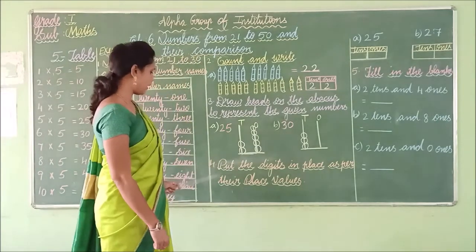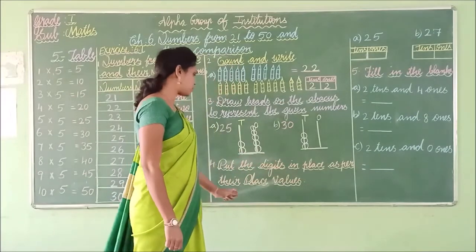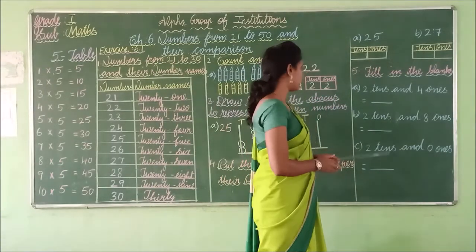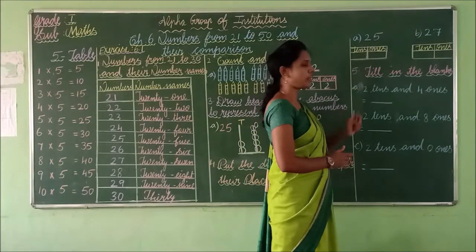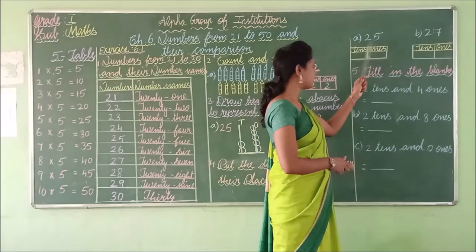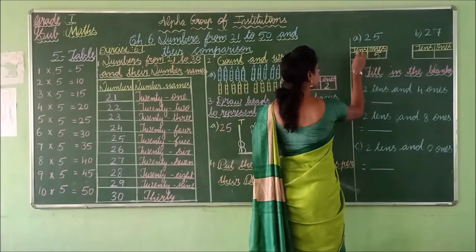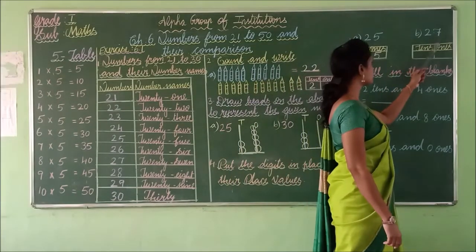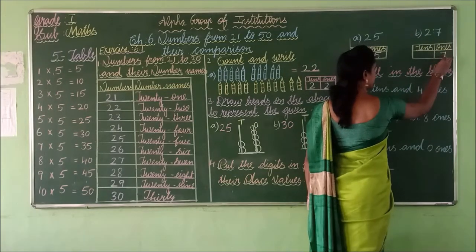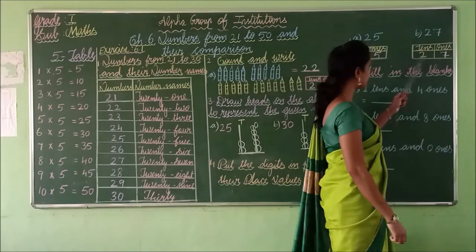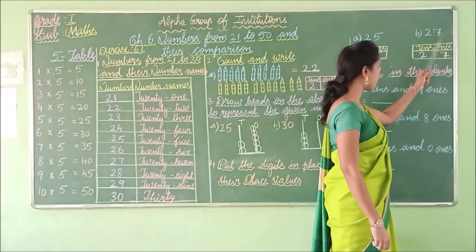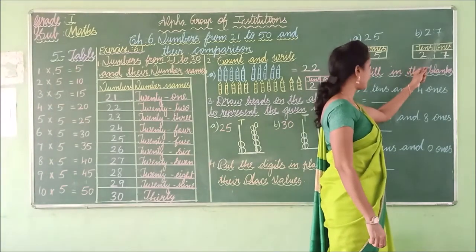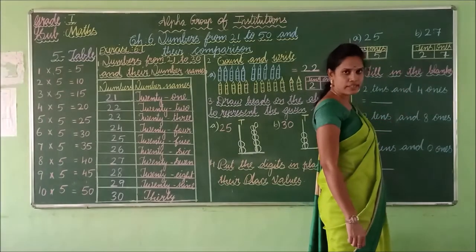Next: Put the digits in place as per the place values. We have to write these numbers according to the place value. See the first problem: 25. So 5 in 1's place and 2 in 10's place — that is 25. Next one: 27. So 7 in 1's place and 2 in 10's place — that is 27. Always start from the 1's side and move towards the left.